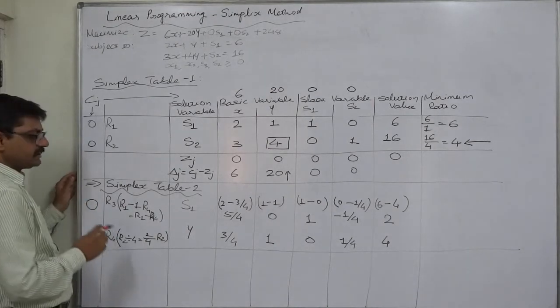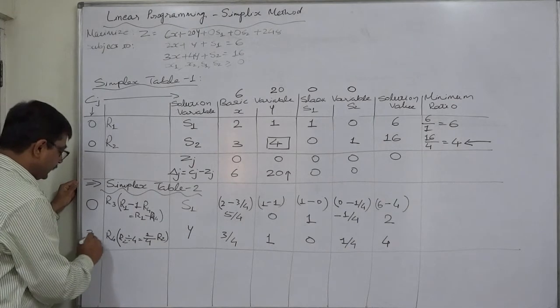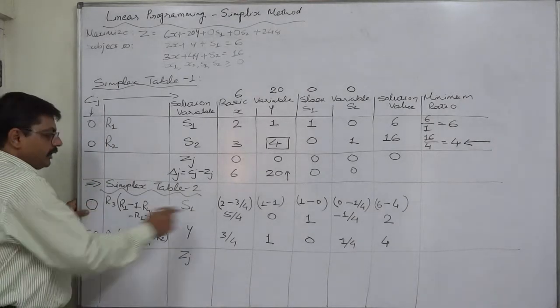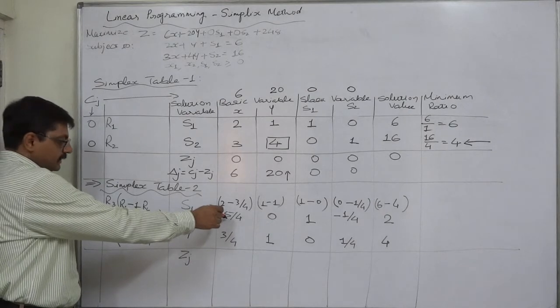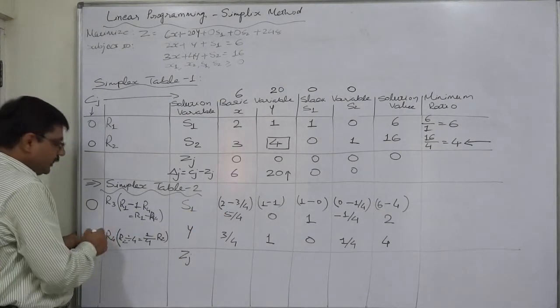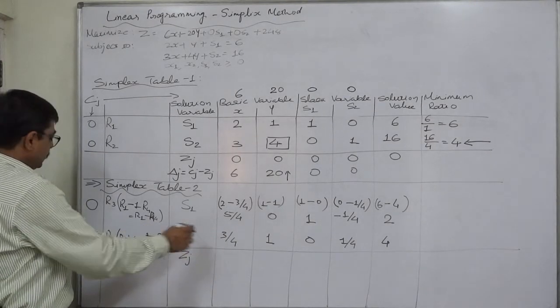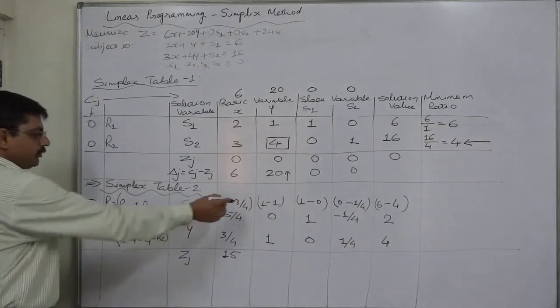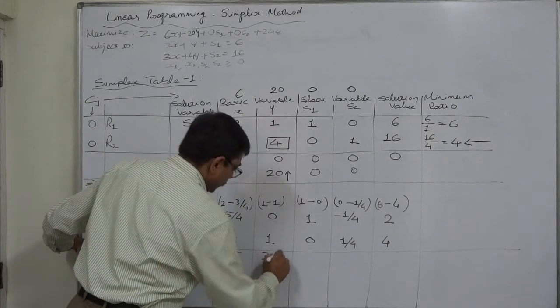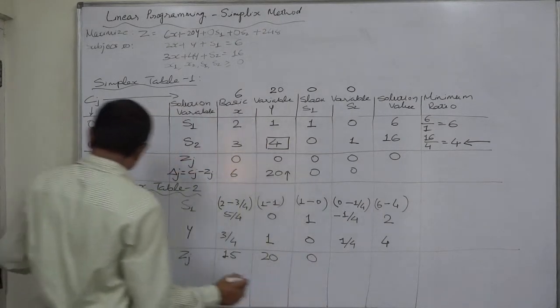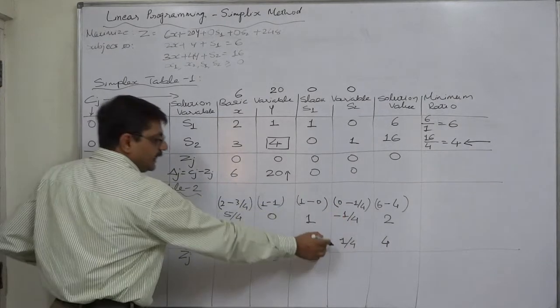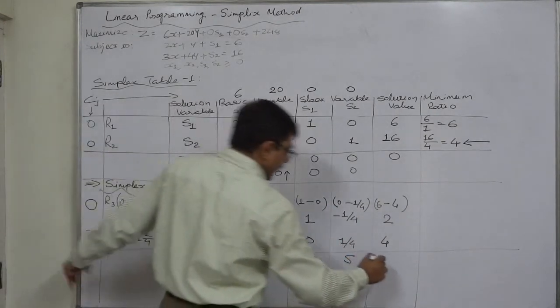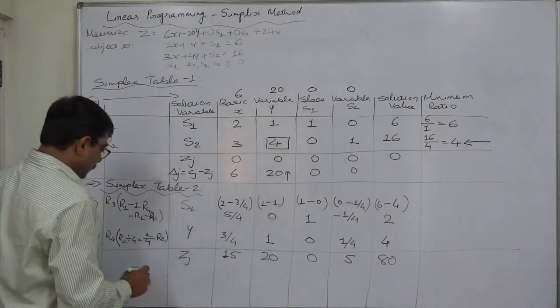Since s1 is here, its coefficient from z function is 0. Y, its coefficient is 20 in the z function, so 20. Now we can write zj values: 0 into 5/4 remains 0, plus 20 into 3/4—20 into 3, 60 divided by 4 is 15. 0 into 0 is 0, 20 into 1 is 20. 0 into 1 is 0, 20 into 0 is 0. 0 into minus 1/4 is 0, 20 into 1/4 is 5. 0 into 2 is 0, 20 into 4 is 80.